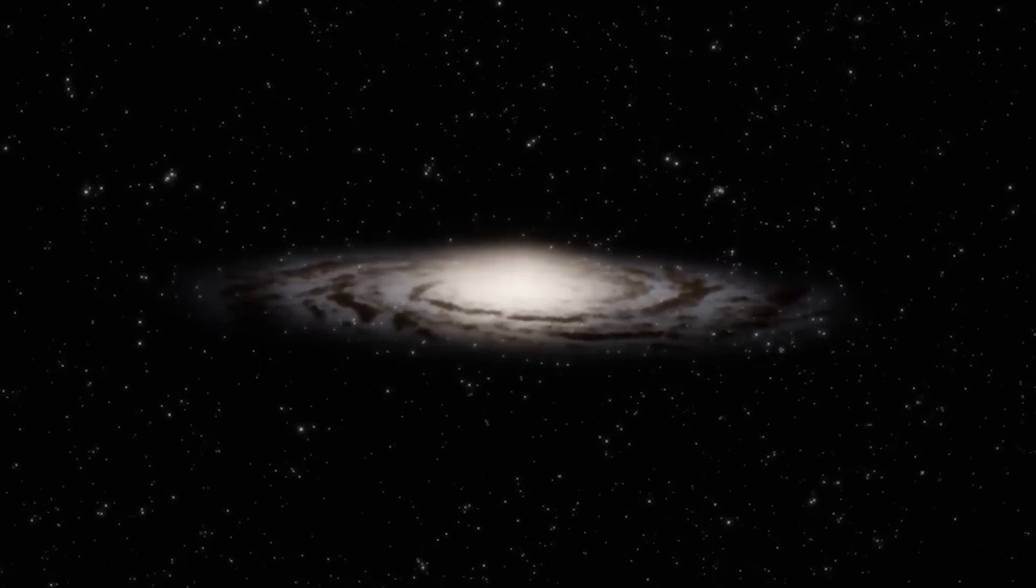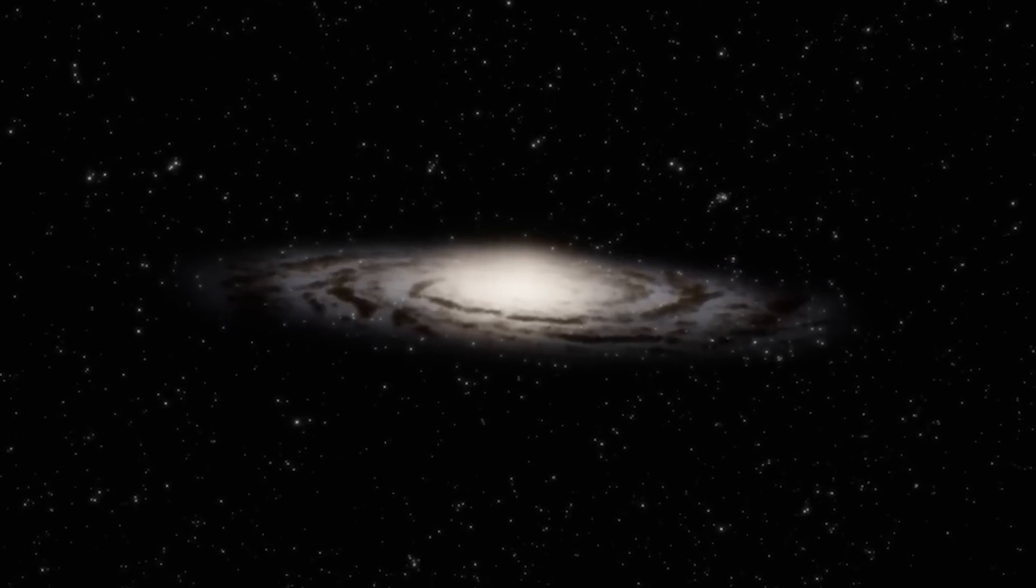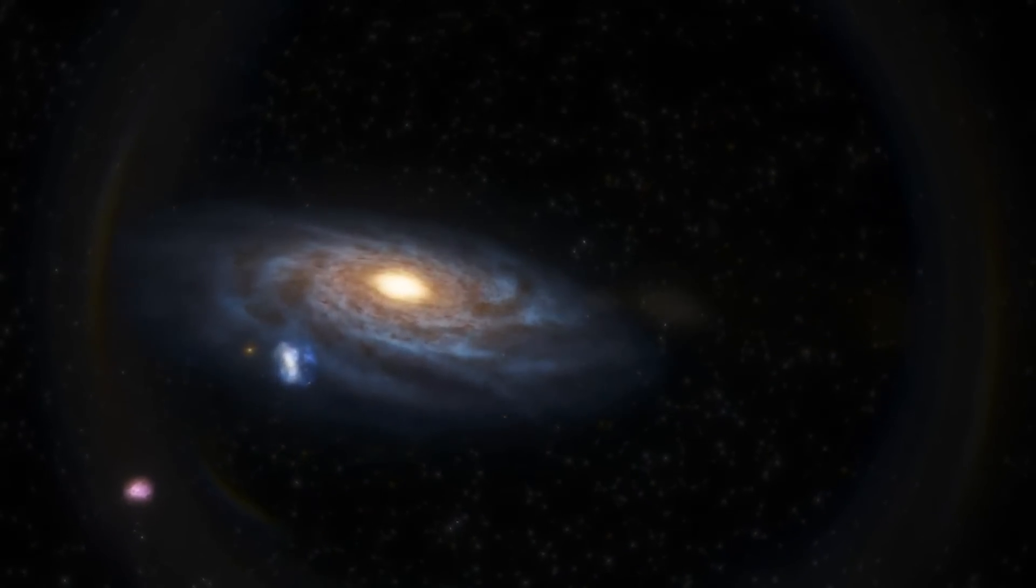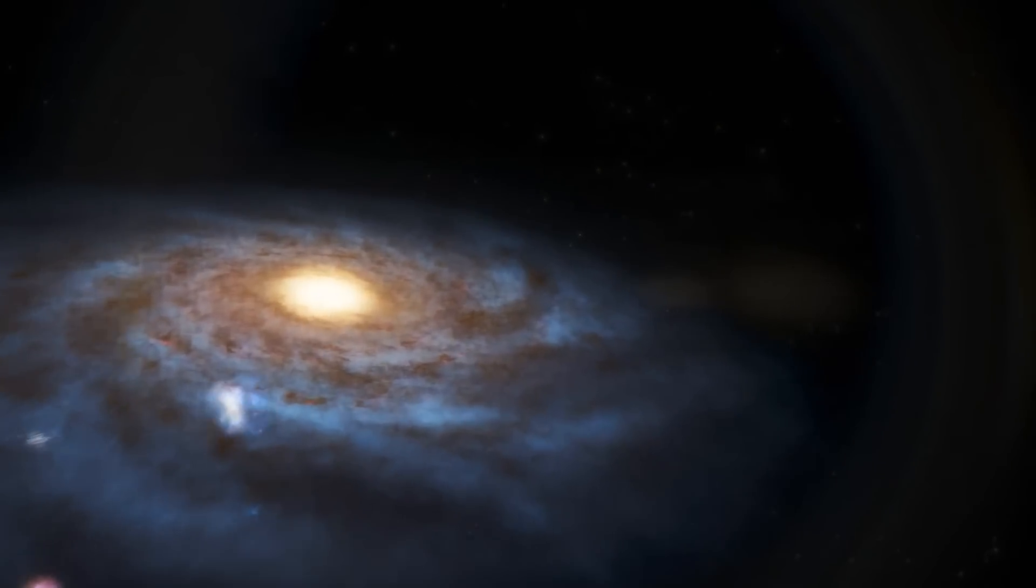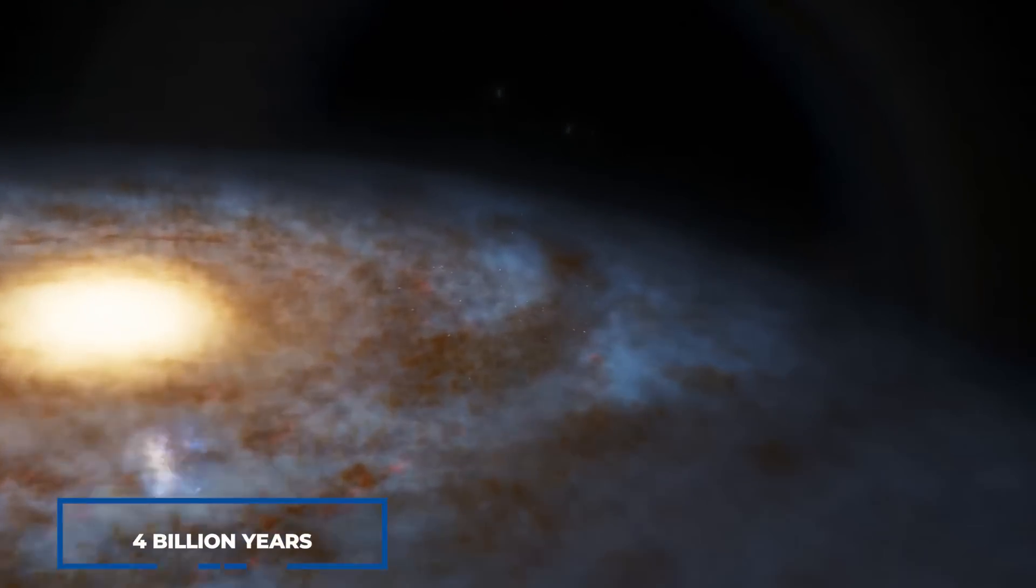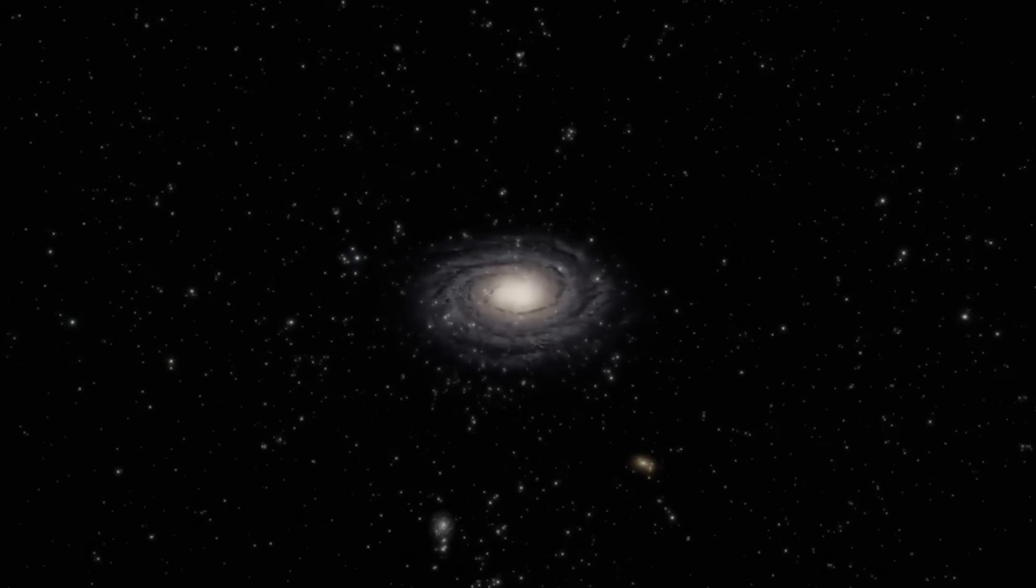The bottom line is, the Andromeda merger has already begun, and the two spiral galaxies will form one giant elliptical galaxy in about 4 billion years. Let us know what you think about this merger in the comments section below.